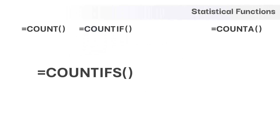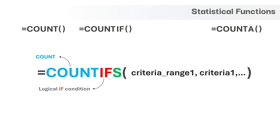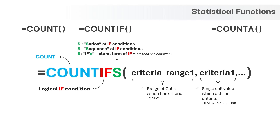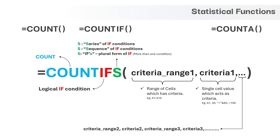Next is the COUNTIFS function and it is just an extension of COUNTIF. The COUNT and IF have the same meanings. The only addition is the letter S which stands for a series or sequence of IF conditions — essentially the plural form, meaning multiple conditions. You give the range of cells as input to criteria_range1 and criteria1 must be part of criteria_range1. For multiple criteria, you extend the same logic for criteria_range2, criteria2, criteria_range3, criteria3, and so on.